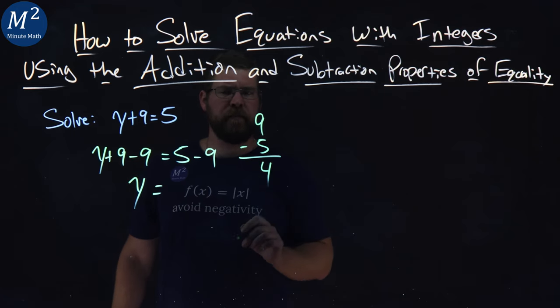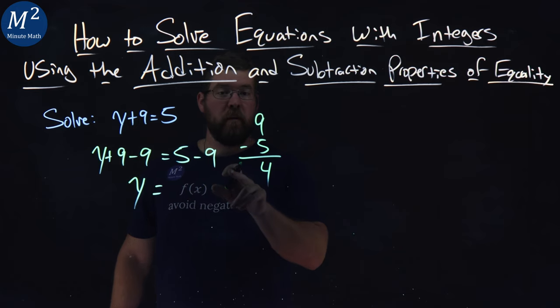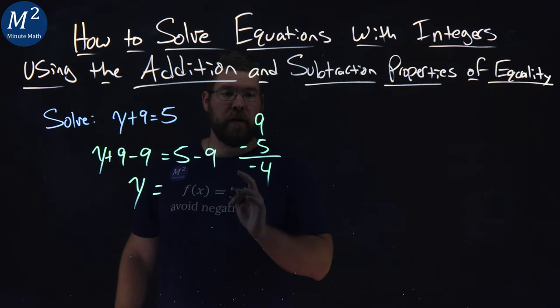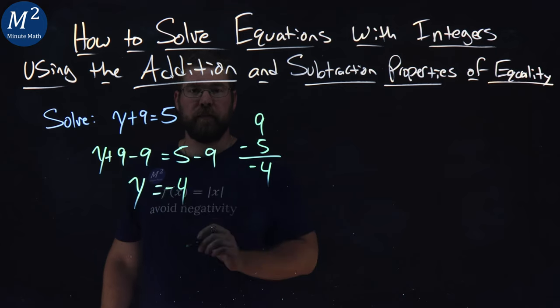But it's going to be more negative, so it's going to be a negative 4 right there. So 5 minus 9 is negative 4.